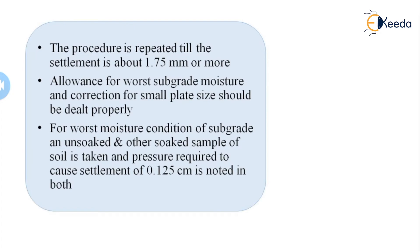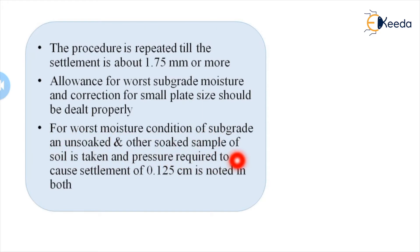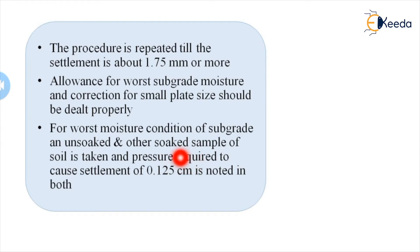Deflection of the plate is measured by deflection dials placed at one-third points of the plate near its outer edge to minimize bending, and a series of stacked plates is used. The average of three or four settlement dial readings is taken for the applied load. Load is increased in increments of 0.25 mm settlement and readings noted until settlement reaches about 1.75 mm or above. Moisture correction for the small plate must be applied for worst subgrade moisture conditions.